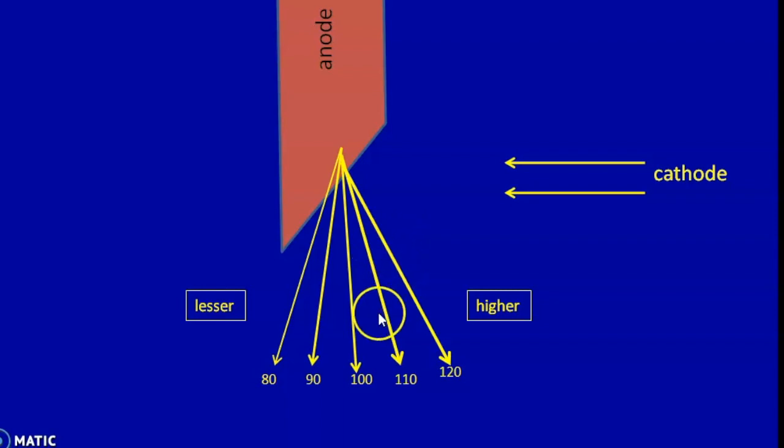As you can see when the relative intensities are measured, we have a central ray as a standard 100% intense beam and those towards the anode side have lesser intensities and those towards the cathode side have higher intensities.